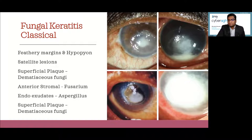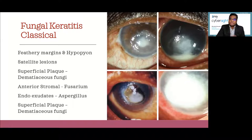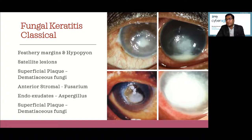Anterior stromal infections in fungal keratitis are mostly caused by fusarium, and deeper infections are more likely caused by aspergillus. So remember: anterior stromal is more likely fusarium; dematiaceous fungi require therapeutic debridement or your drugs will not work; aspergillus infections are deeper and will require modification of treatment, which we'll discuss in the treatment section.